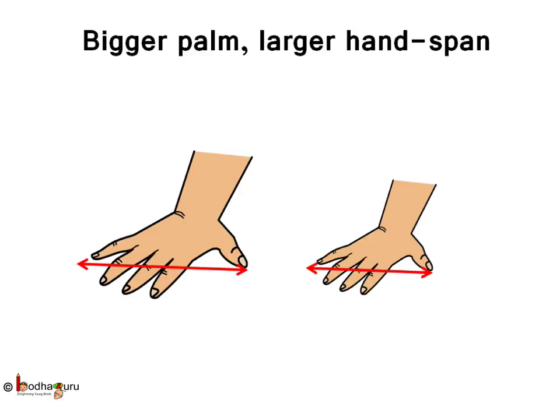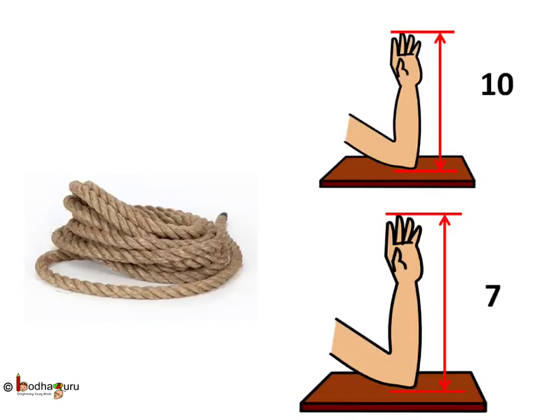Say a rope is ten hand spans long if a shorter person or a child measures it. But it may turn out to be seven hand spans long if an adult or taller person measures it.